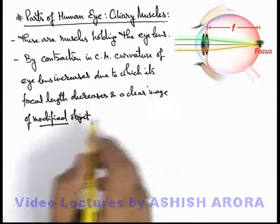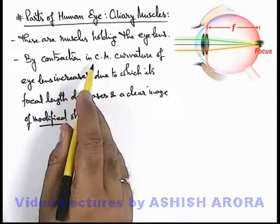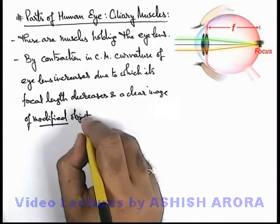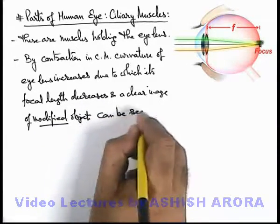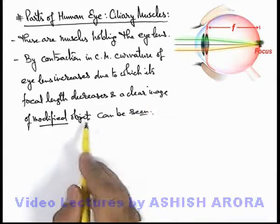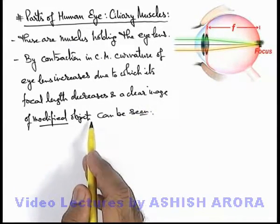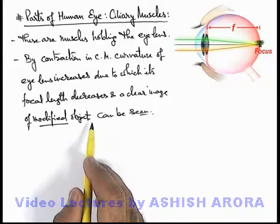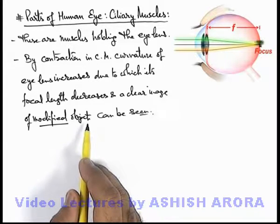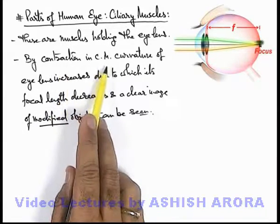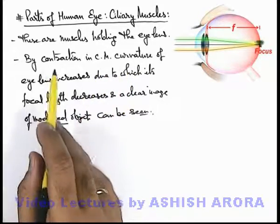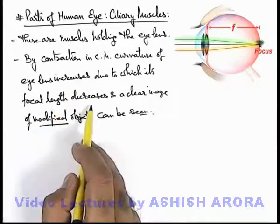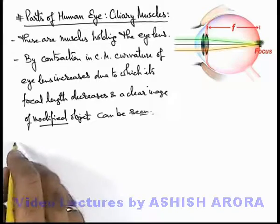The image is produced by relaxation or contraction in the ciliary muscles, and the object can be seen clearly. All nearby objects which are placed anywhere in the surroundings — if we look at any nearby object, due to contraction in ciliary muscles the curvature changes. By contraction the curvature of the eye lens increases, due to which focal length decreases, and vice versa also applies.